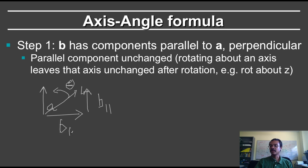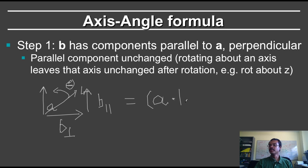The parallel component lies along vector A and is therefore unchanged — just as rotating about a given axis leaves that axis unchanged. The formula for the component of B along A is given by A dot B, which lies along direction A. So B_parallel equals (A dot B) times A, and B_perpendicular equals B minus the parallel component.